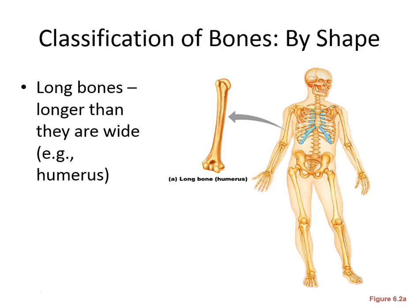Classifications of bones — bones are classified by four different shapes. Long bones are longer than they are wide, with several examples in your limbs: your humerus, femur, tibia, fibula, etc.